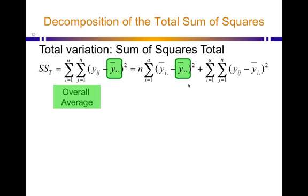First, let's look at the different terms in this equation. The y bars with the two dots after them are the overall average. Remember that 1408 number that we saw earlier? All 24 points averaged. That's what these y with two dots after it means are.